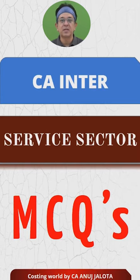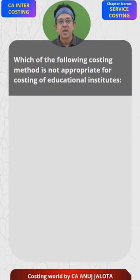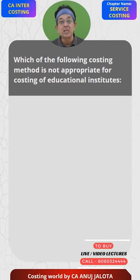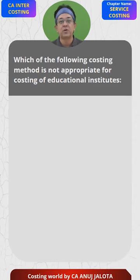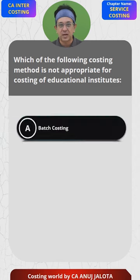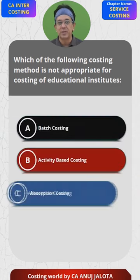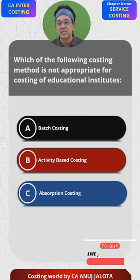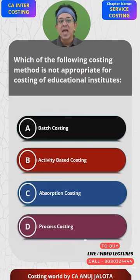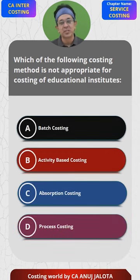CA Inter Service Sector MCQs. Which of the following costing methods is not appropriate for an educational institute? The options are: A. Batch Costing, B. Activity Based Costing, C. Absorption Costing, and D. Process Costing. Think of the correct answer.